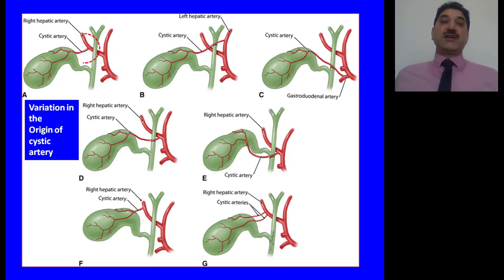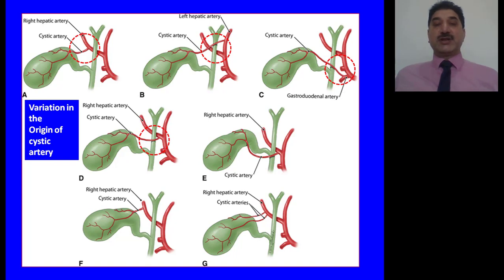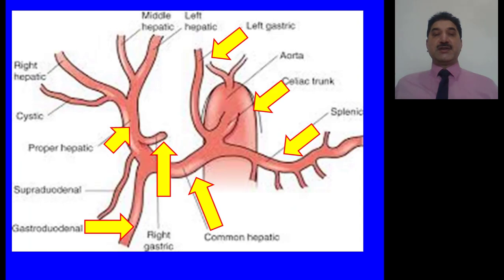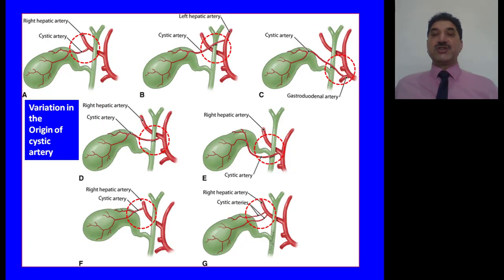Variations in the origin and course of the cystic artery: the cystic artery usually arises from the right hepatic artery, but it may arise from the left hepatic artery. At times it arises from the gastroduodenal artery and passes anterior to the common hepatic duct. It may arise from the right hepatic artery but proximal to the common bile duct, passing anterior to it, or arise from the right hepatic artery at a higher level. At times there can be two cystic arteries. Keeping in view these variations, it is essential for every surgeon to know the anatomy of this region.